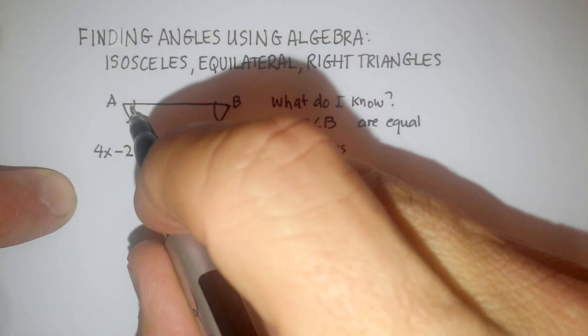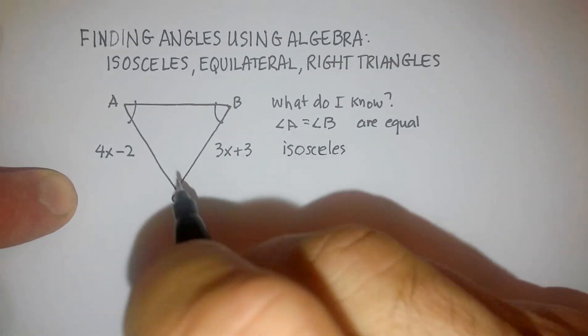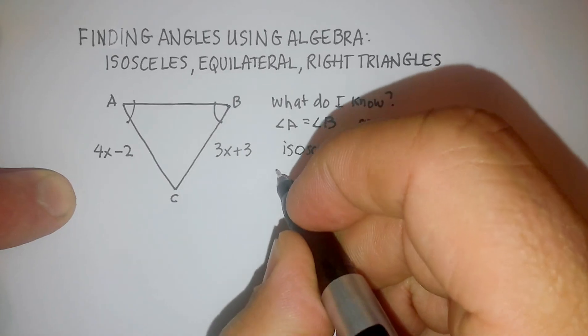Well, if isosceles triangles have the opposite, two sides are also equal. Now I'm using something called the base angle theorem.